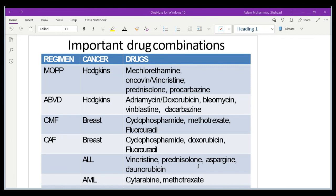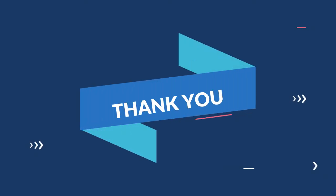When standard therapies are not working and we need to try a new combination, we must consider: mechanism of action, dose calculation, adverse effects, drug-drug interactions, optimized scheduling, cycle gaps, duration of treatment, and monitoring of toxic effects. All these factors are important when discussing multiple drug regimens. Thank you for today's lecture — hope to see you in the next one.